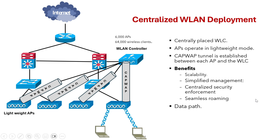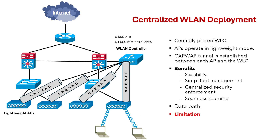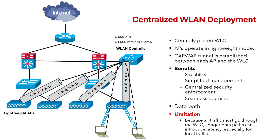Let's look at the data path in centralized wireless LAN deployment. Unlike autonomous APs where traffic can flow directly between APs, in centralized deployment all traffic must pass through the WLC and then come back. Because of this, there is a limitation: since all traffic has to go through the WLC, longer data paths can introduce latency, especially for local traffic. The round-trip time between the AP and the WLC should be less than 100 milliseconds.